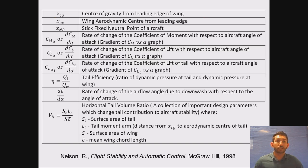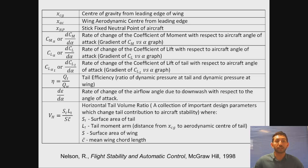Some of the terms that you see on the screen are consistent with what you'll find in Nelson's Flight Stability and Control. The rate of change of the coefficient of moment with respect to aircraft angle of attack, or DCm/D-alpha, can also be represented as Cm_alpha. You'll tend to see these used interchangeably throughout Nelson and other textbooks, as well as in this flight series.